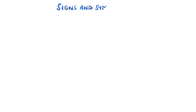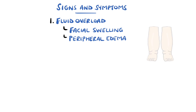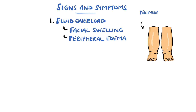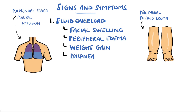The signs and symptoms are linked to hypoalbuminemia, which includes peripheral edema and fluid overload. Particularly in children, this can be evident as facial swelling, but can also occur in adults, particularly around the eyes. Fluid overload can mean weight gain, peripheral edema, and even the development of ascites or pleural effusion, which can manifest as shortness of breath, known as dyspnea.